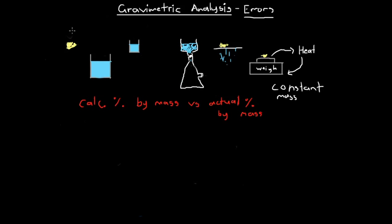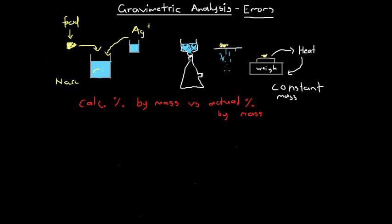Using the same example as before, we have some food dissolved in solution, and we want to measure the sodium chloride content — how much NaCl is in there. We're going to add a solution containing silver ions to create a precipitate, then filter it, heat it, and weigh it.